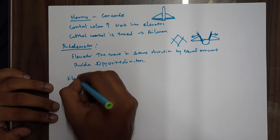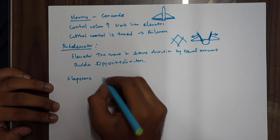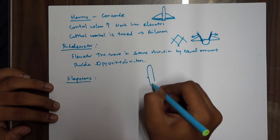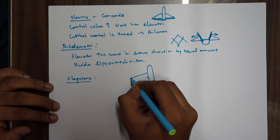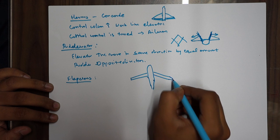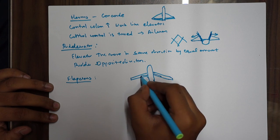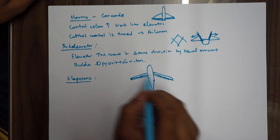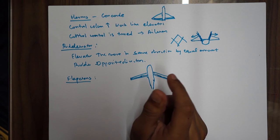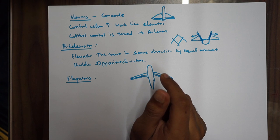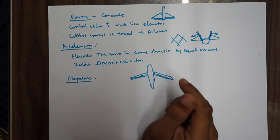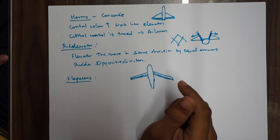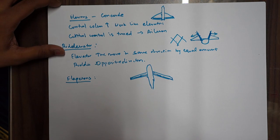Flapperons are generally used in modern commercial jets where flaps are often used. Flaps are generally placed at the inboard edge, but flapperons extend throughout and are a combination of flaps and ailerons, where flaps can also be used as an aileron. That's all about controls — next we're going to cover control balancing and how aerodynamic forces act on flight controls. Keep watching and share if you like it!